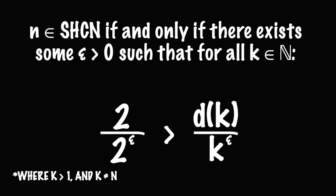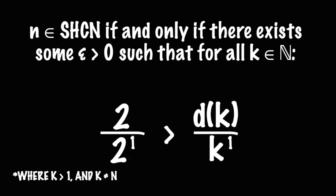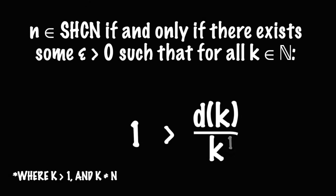So now all we gotta do is find an epsilon that guarantees that 2 over 2 to the epsilon is always going to be greater than d(k) over k to the epsilon no matter what we choose for k. In the case of 2, 1 should work very well for epsilon. The entire left-hand side of the inequality just reduces to 1, and k to the first should also reduce to k.